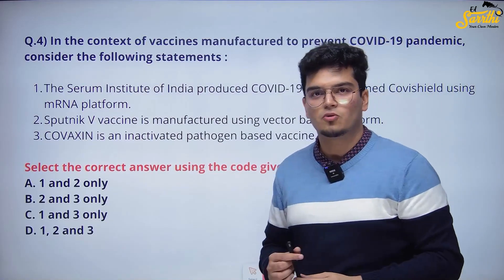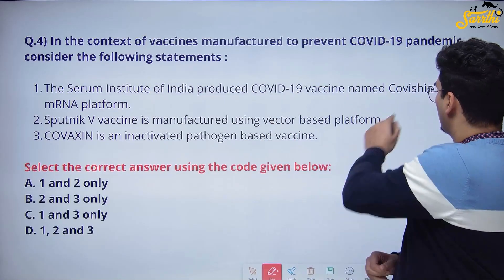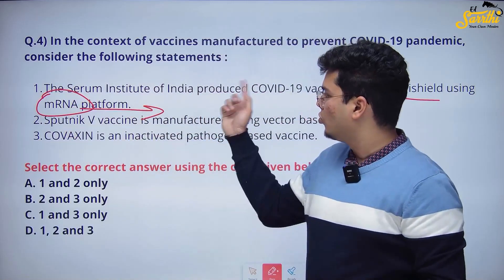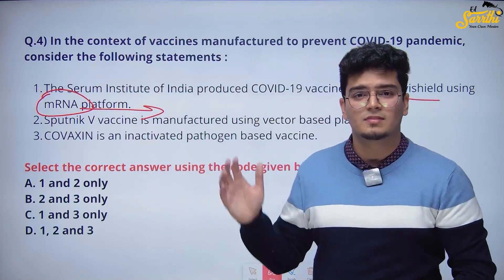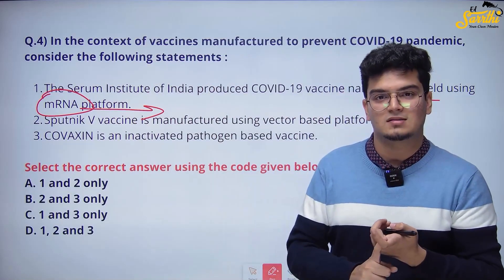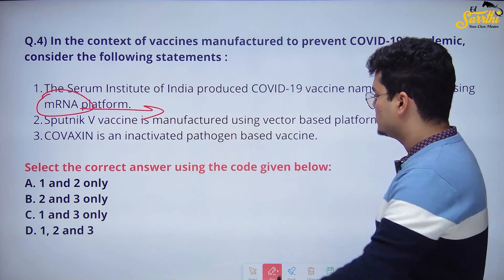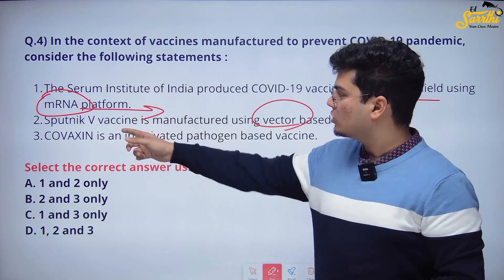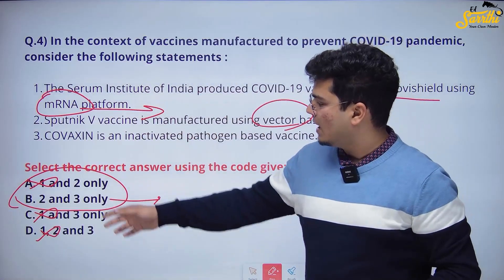In the context of vaccines manufactured to prevent COVID-19, consider the following statements. The Serum Institute of India came out with the COVID-19 vaccine named Covishield using the mRNA platform. India had no mRNA vaccines at that time — Covishield was made on the viral vector platform. This requires conceptual clarity to understand the basics: what is an mRNA vaccine, a viral vector vaccine, a recombinant vaccine, a subunit vaccine? If you know these, it's very easy to answer. Covishield was not made on the mRNA platform. Similarly, Sputnik V was also made on the viral vector platform. If you know just the first statement, you can eliminate options and the answer is option B — statements 2 and 3 only.